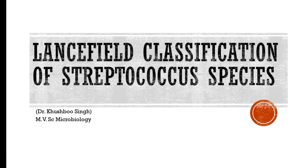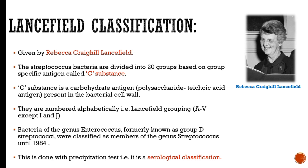Classification of Streptococcus species: The Lancefield classification was given by Rebecca Crackhill Lancefield. Streptococcus bacteria are divided into 20 groups based on a group-specific antigen called C substance, which is a polysaccharide teichoic acid antigen present in the bacterial cell wall. The groups are numbered alphabetically from A to V, except I and J.